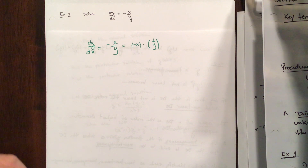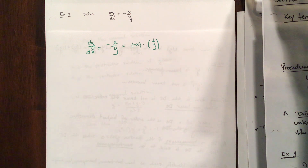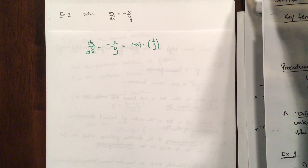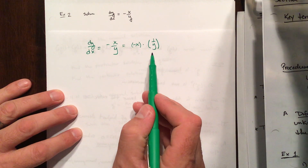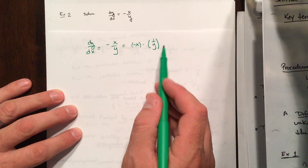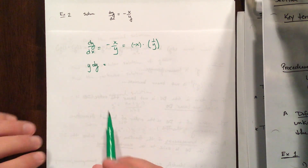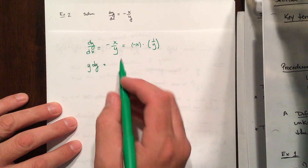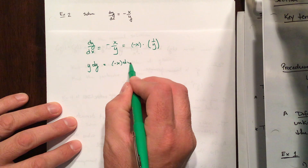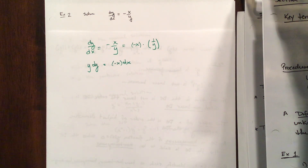Once you've separated the right-hand side, you take all terms involving y and push them to the side where dy is, and all terms involving x to the other side — splitting up the dy and the dx. To move y over to the dy side, multiply both sides by y. To get all the x's on the same side, multiply by dx.